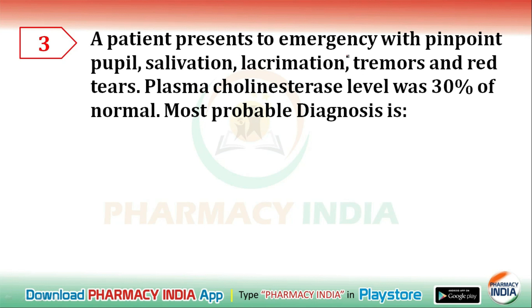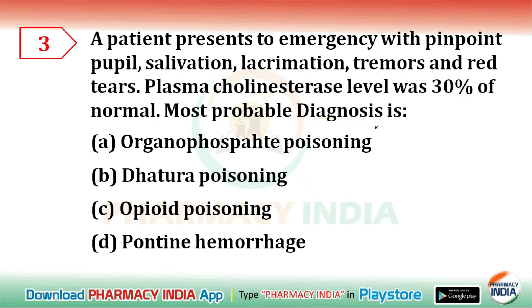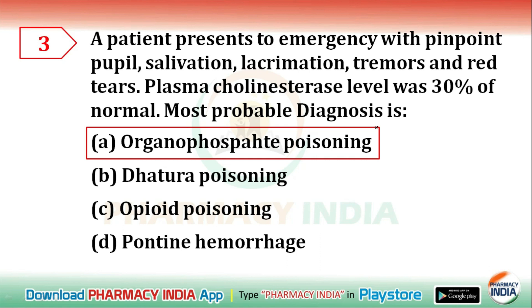Next question: a patient presents to the emergency with pinpoint pupils, salivation, lacrimation, tremors, red tears, and plasma cholinesterase level about 50% of normal. The most probable diagnosis is: organophosphate poisoning, datura poisoning, opiate poisoning, or pontine hemorrhage. The correct answer is organophosphate poisoning.